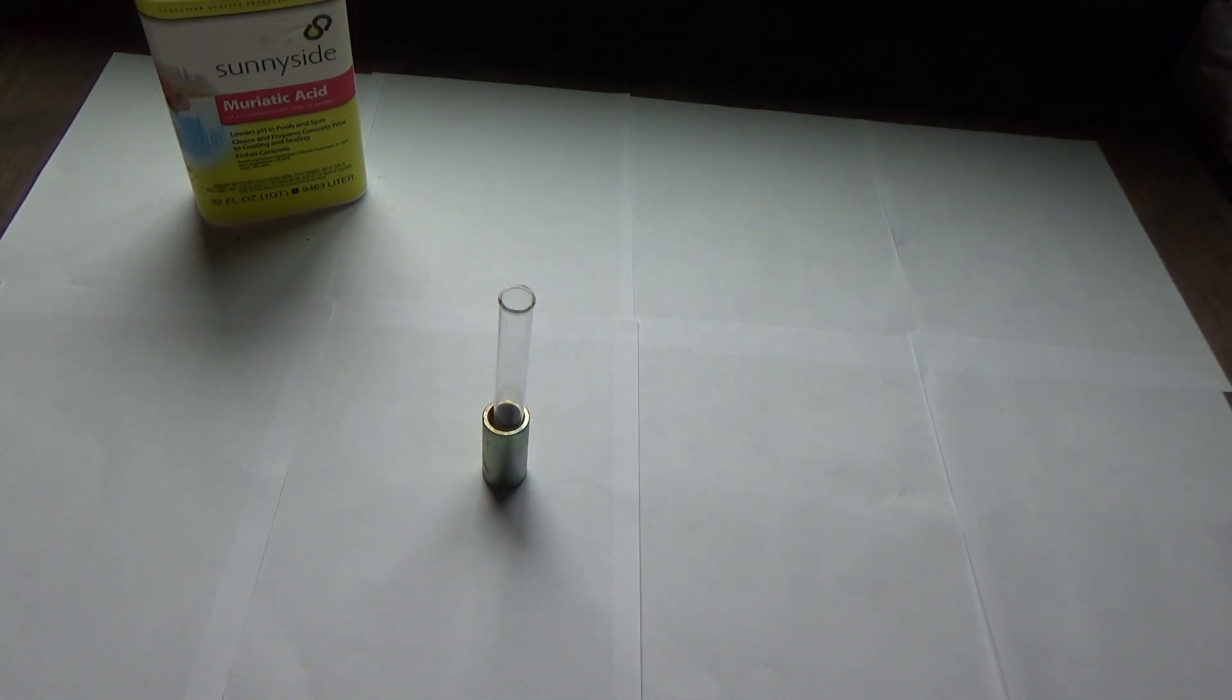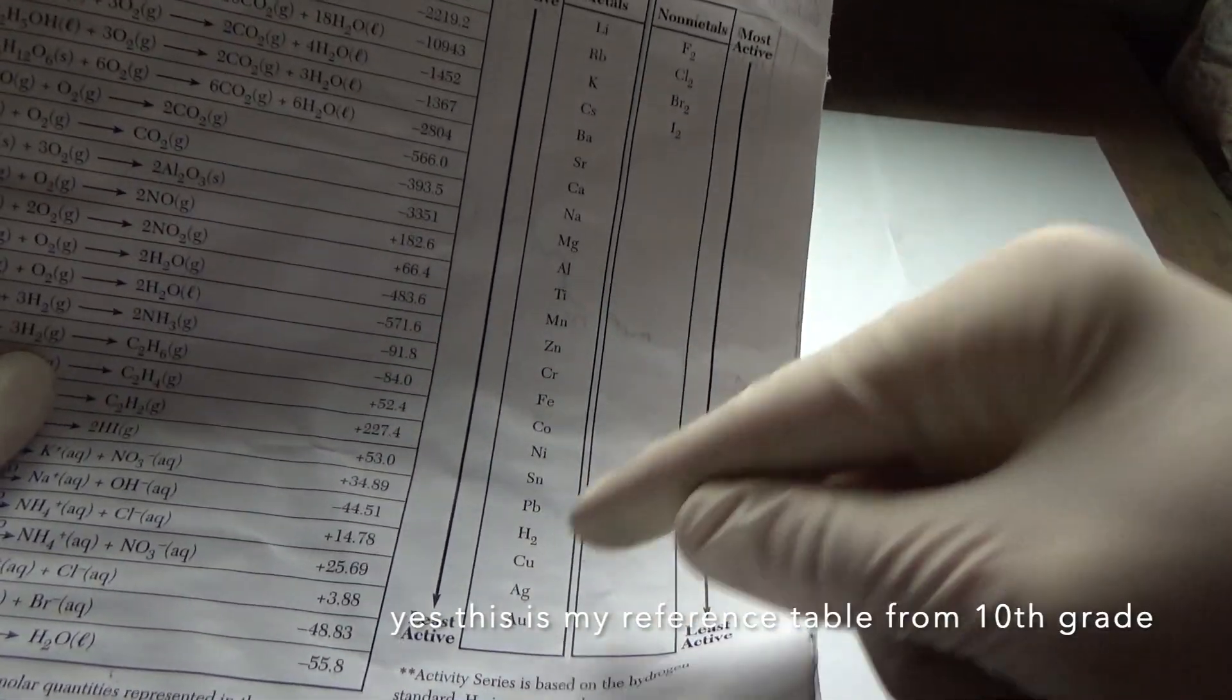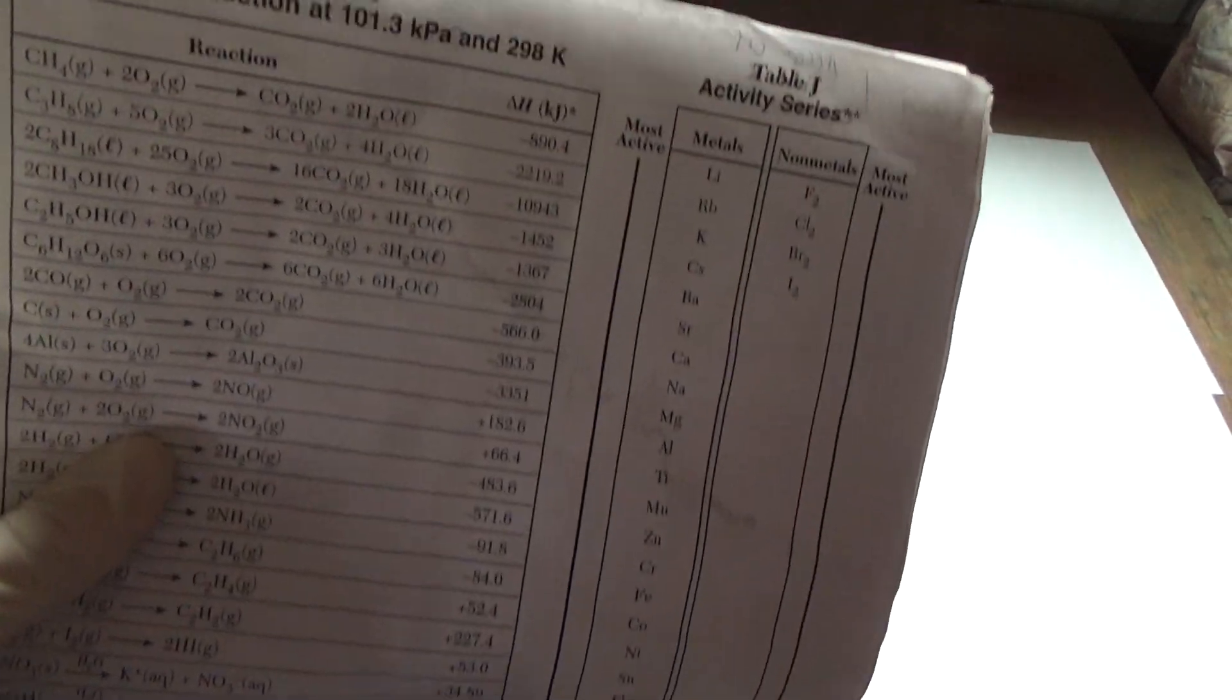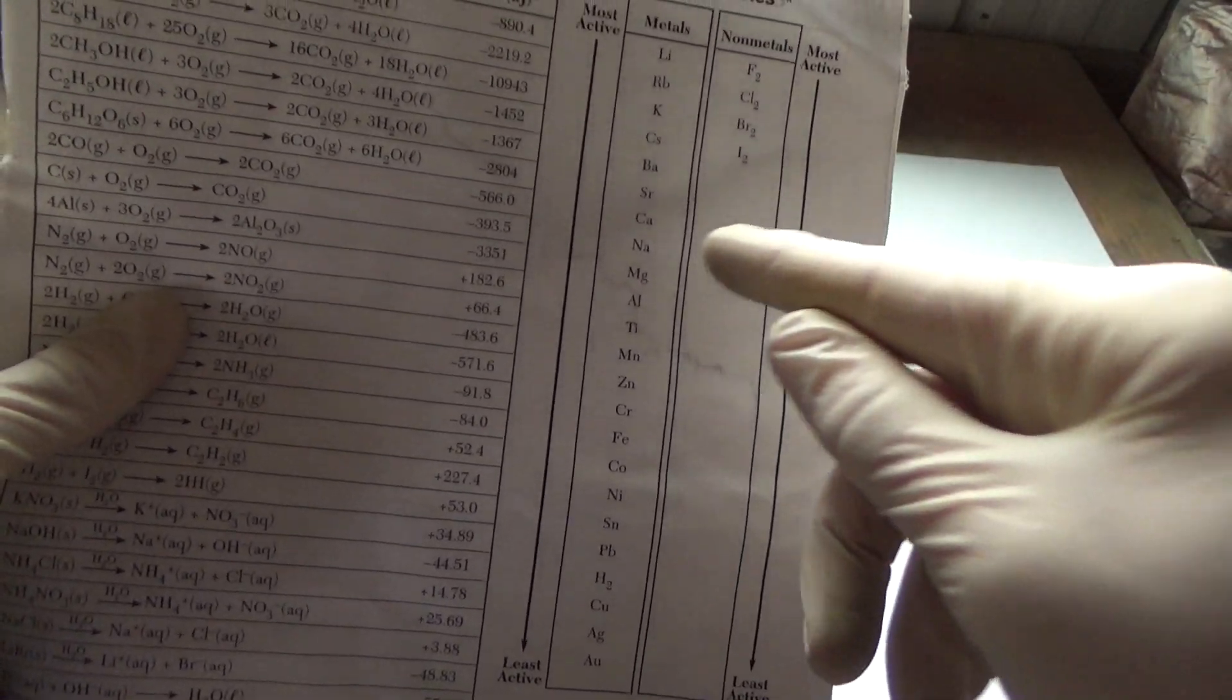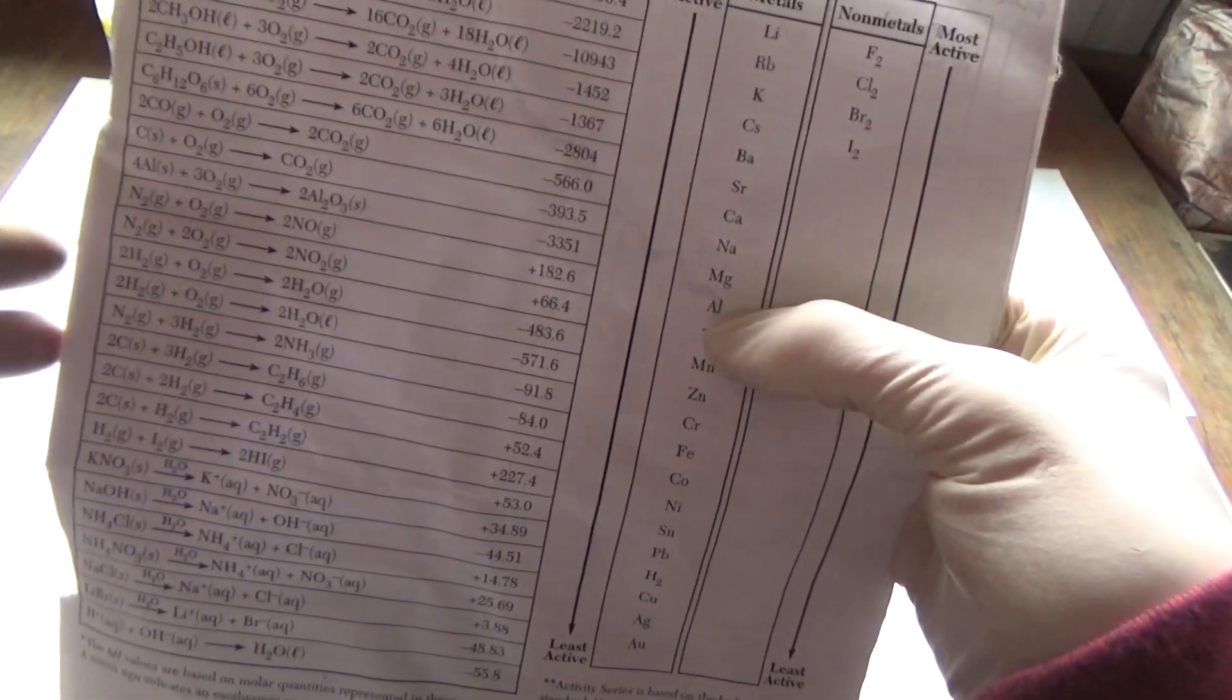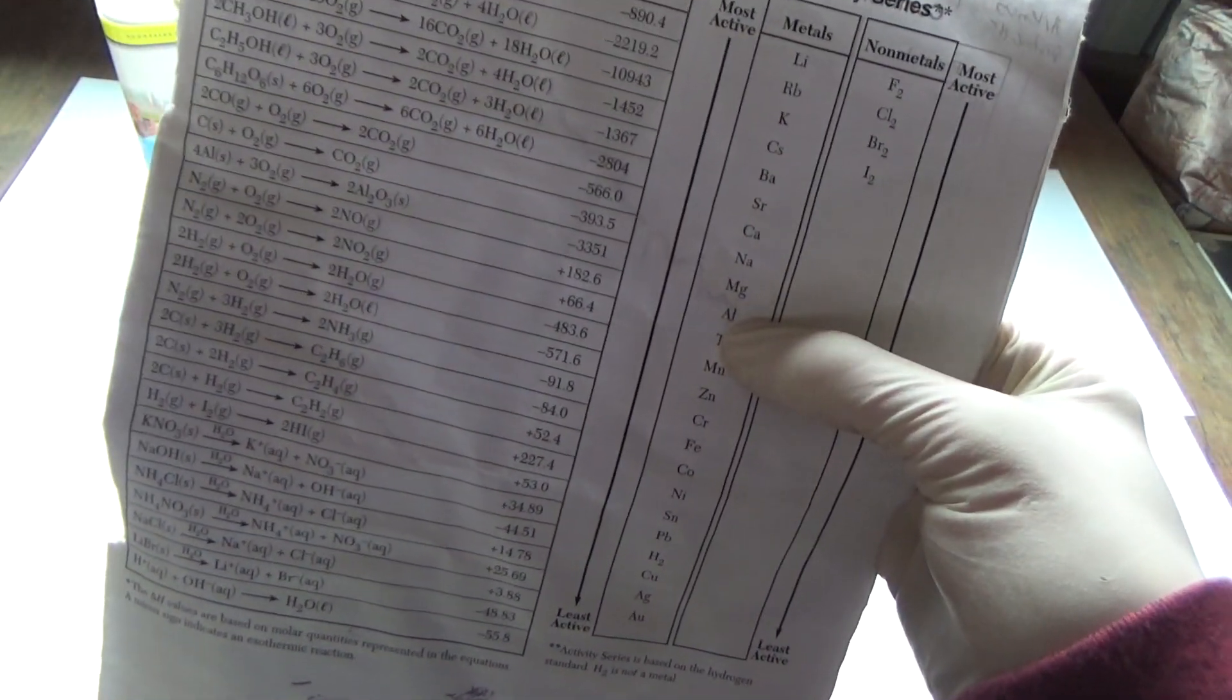So the other ingredient you will need is most likely a metal. So right here I have this paper and hydrogen is right here. Any of these elements above hydrogen, any of these metals will work. I will be using magnesium, but you could grab aluminum cans and cut them up or just take tabs off.